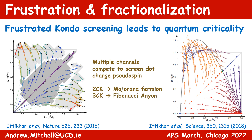These multi-channel Kondo systems host exotic quantum critical points at which non-Fermi-liquid physics emerge. They provide access to more unusual phenomena by simulating models of frustrated interactions — in this case, frustrated Kondo screening. This leads to fractionalization with the appearance of Majorana fermions in the two-channel case and even more exotic Fibonacci anyons in the three-channel case. These fractionalized zero modes are important in the context of topological quantum computation, and charge Kondo circuits provide a possible route to these objects.